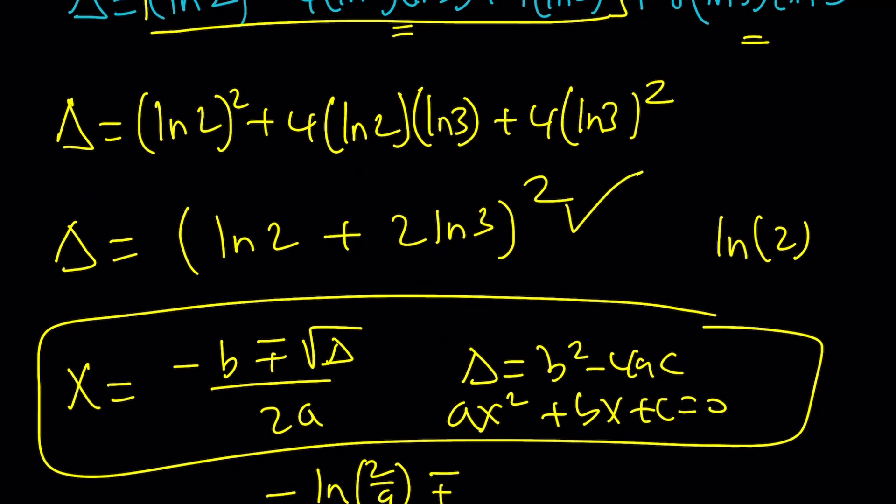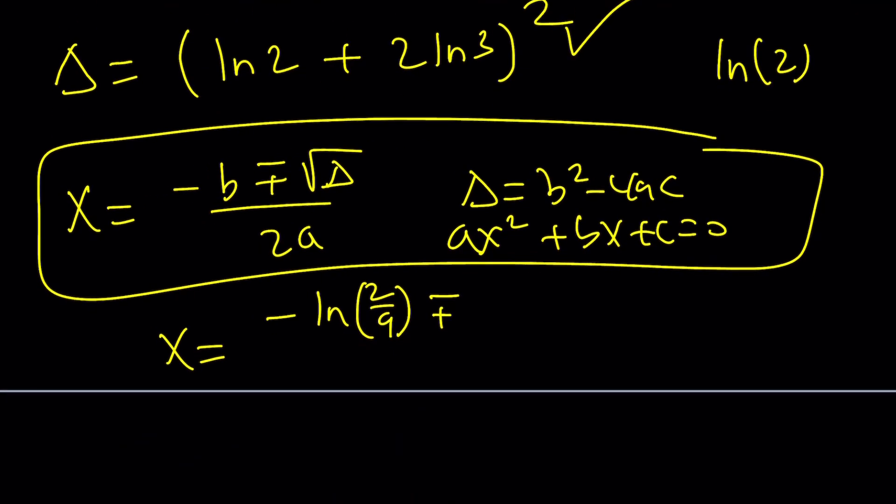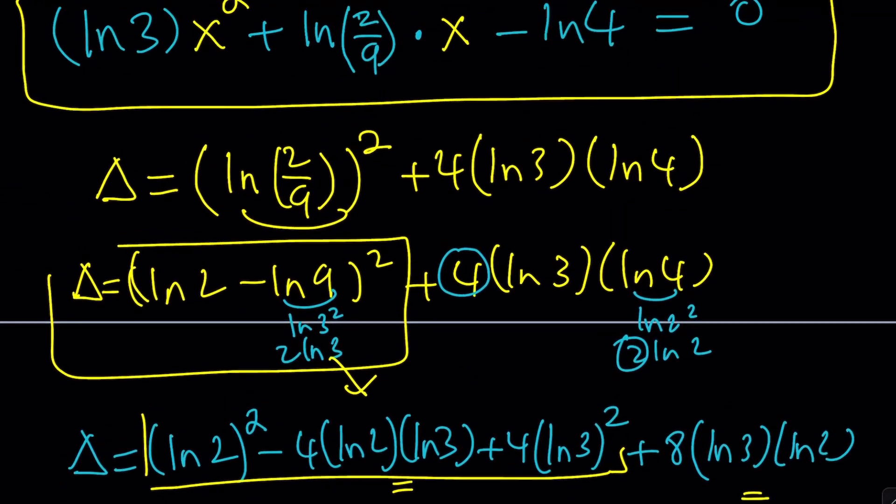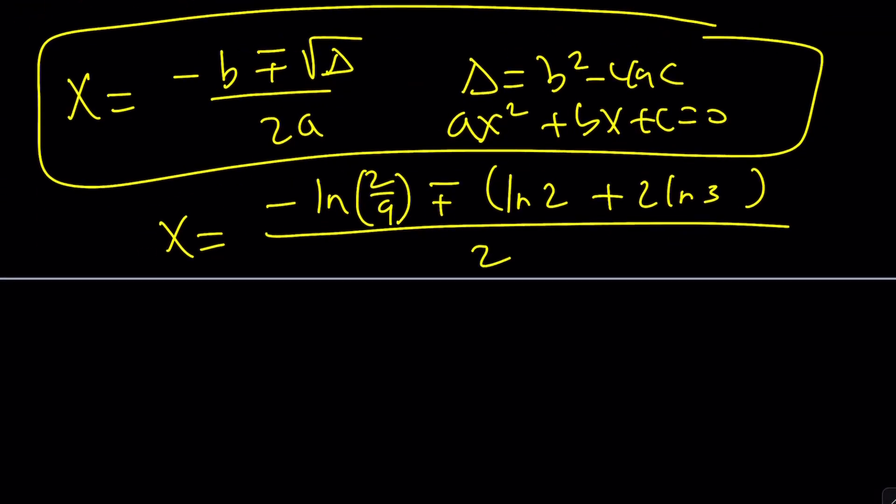Now, let's go ahead and plug it in then. What is negative b? b is the coefficient of x, which is ln 2/9. So, it's going to be negative ln 2/9. Don't worry, we're going to simplify that. And then, plus minus the square root of delta. This is where this comes in handy. If you square root that with the plus minus sign, you're going to get something nice. Look at that. Beautiful. And divide that by 2a. The coefficient of x squared is ln 3. So, it's going to be 2 ln 3.